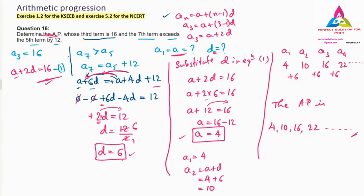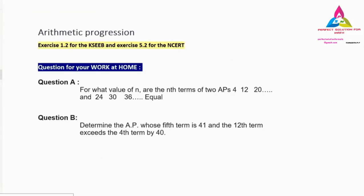This is our final answer: the AP is 4, 10, 16, 22, and so on. Understand the question and it becomes easy to solve. Here are two homework questions: (a) For what value of n are the nth terms of APs 4, 12, 20... and 24, 30, 36... equal? (b) Determine the AP whose 5th term is 41 and the 12th term exceeds the 4th term by 40.